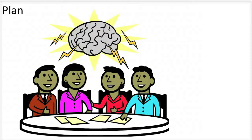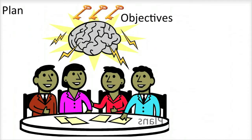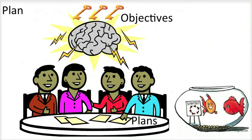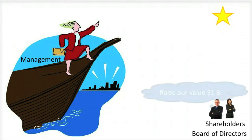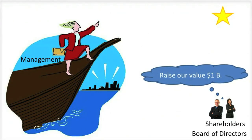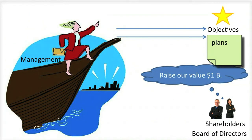The planning phase of the Management Cycle is the phase in which management determines what the organization's key objectives are, and then develops plans or strategies on how to achieve them. Management is responsible for leading an organization toward the successful completion of its objectives. Often, objectives are passed down by the company's owners or board of directors, such as increasing shareholder value by one billion dollars. At other times, owners allow management more flexibility in determining objectives, but usually expect management to develop specific plans to achieve them.